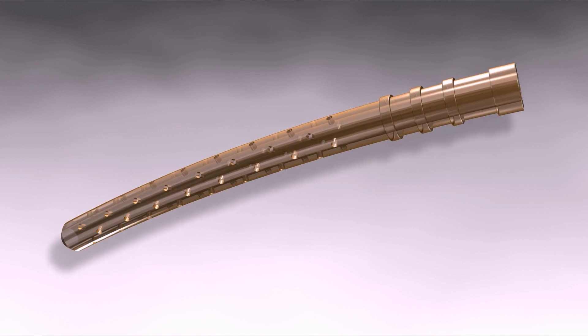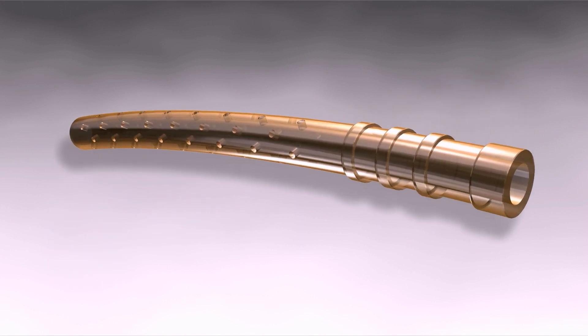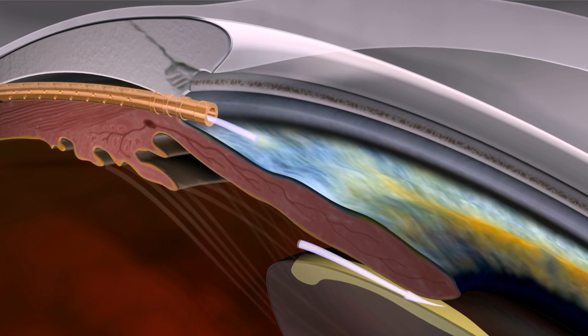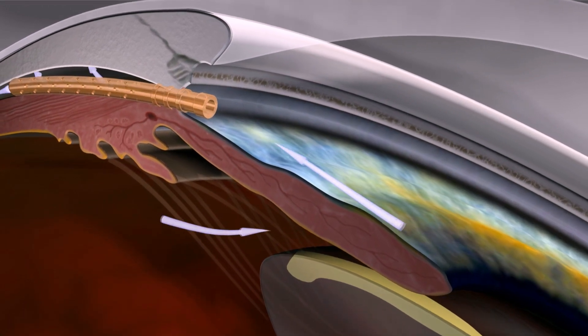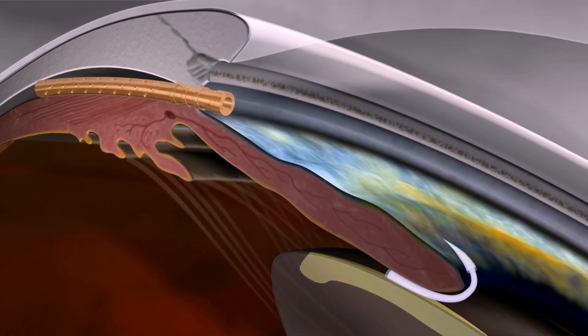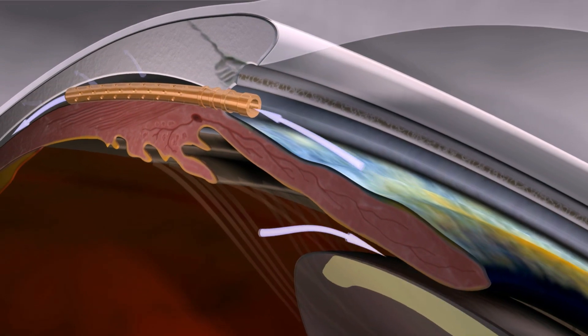The Cypass Microstent, an implantable device, is designed to reduce intraocular pressure by enhancing aqueous outflow to the suprachoroidal space in a minimally invasive ab-internal procedure.